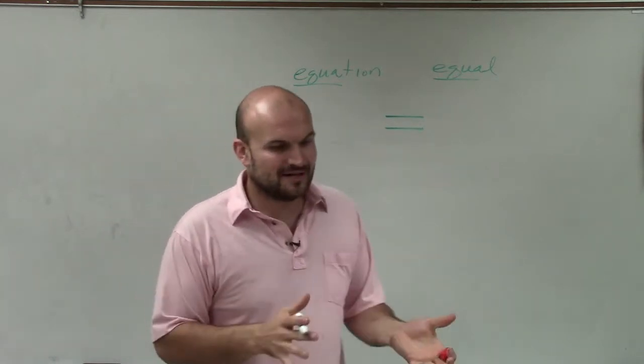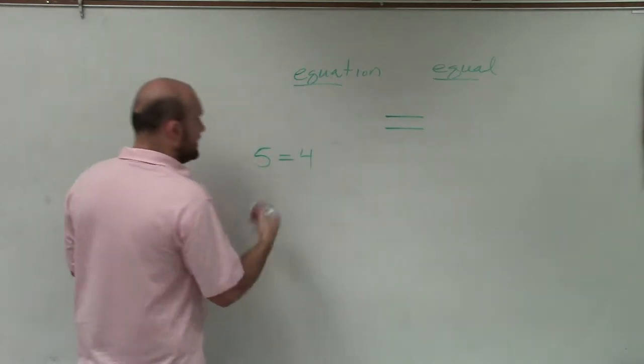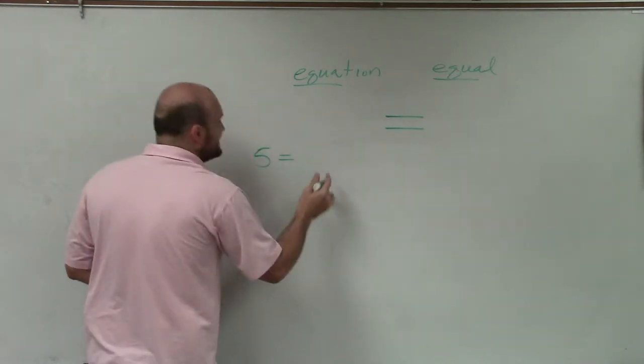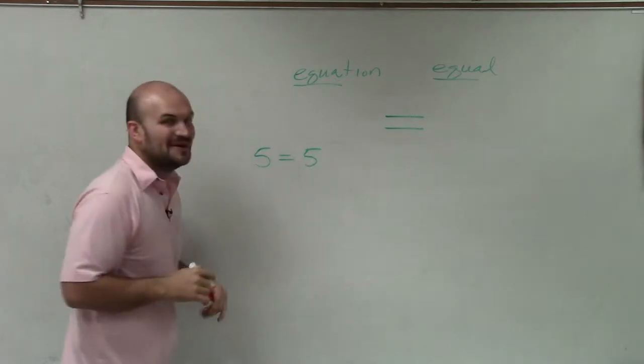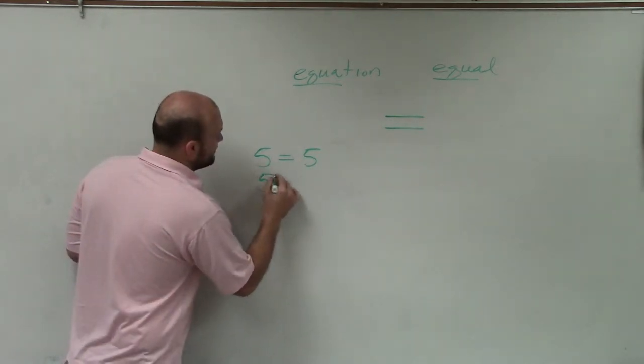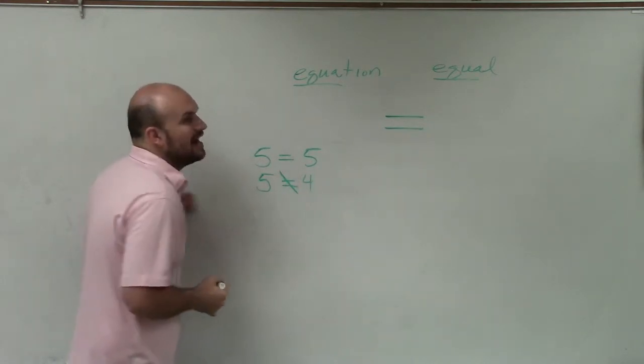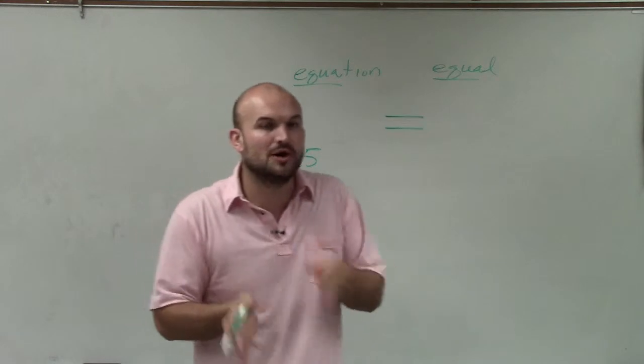But we're not only just going to be saying numbers are equal to numbers. We can say five is equal to four. Sorry, I was thinking ahead of my next example. Five would be equal to five, right? Obviously. However, five is not equal to four. So when we have something like that, we draw a line through it that's saying those two are not equal.